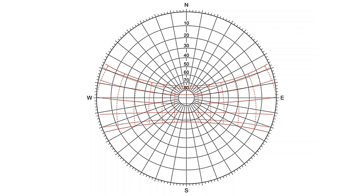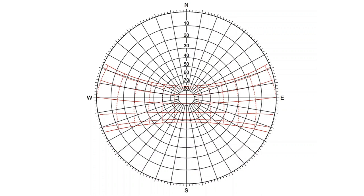This image shows a typical sunpath diagram. We need to understand some basic concepts to read and interpret it for design scenarios. The two basic terms are altitude angle and azimuth angle.